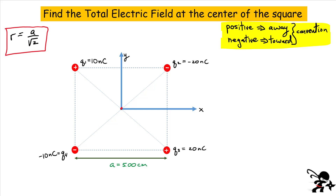Let's now plot some vectors on our diagram. We're going to plot the electric field vectors produced by each of these point charges using our convention. Let's look at our positive charges first. Q1 is 10 nanocoulombs, so it produces an electric field at the center that points away from it — I'll draw that vector and call it E1. The other positive charge is 20 nanocoulombs — it's twice as big. The electric field produced by Q3 at the center points away from it, and I'll make it a little bit bigger — it should be twice the length because the charge is twice as big and the distance is the same.